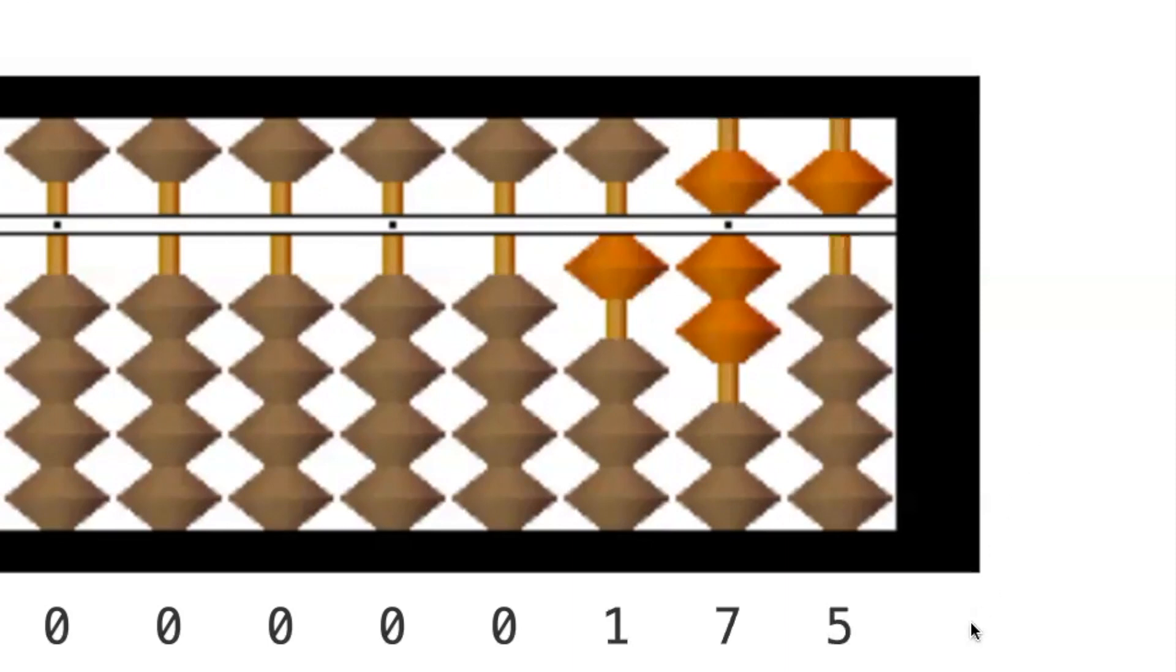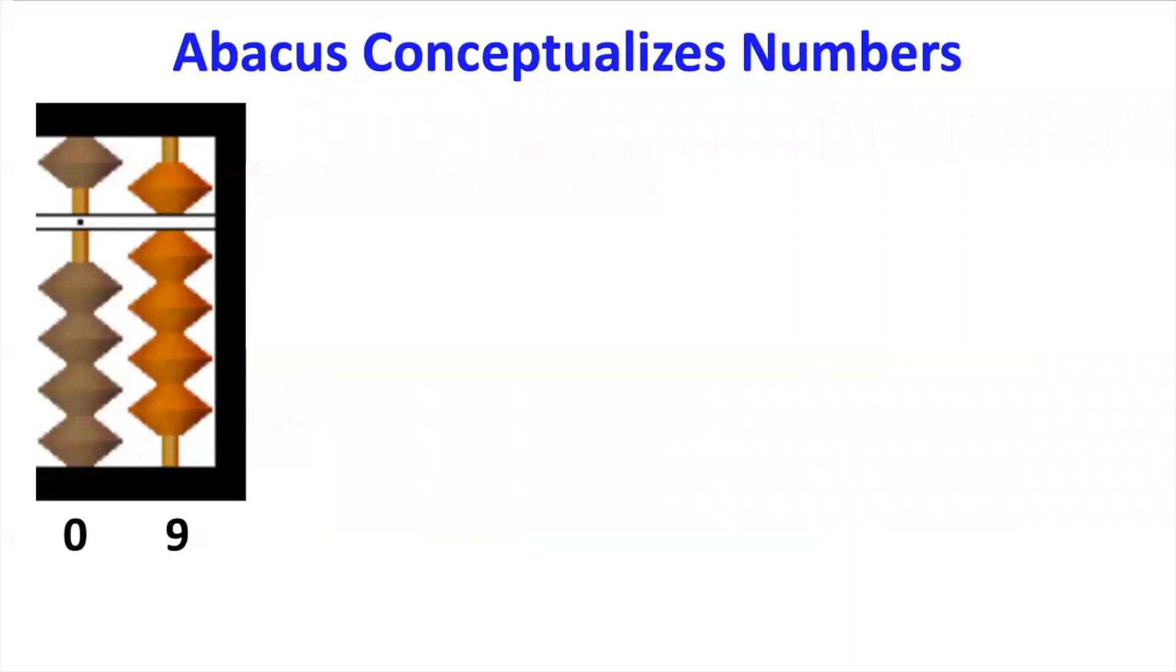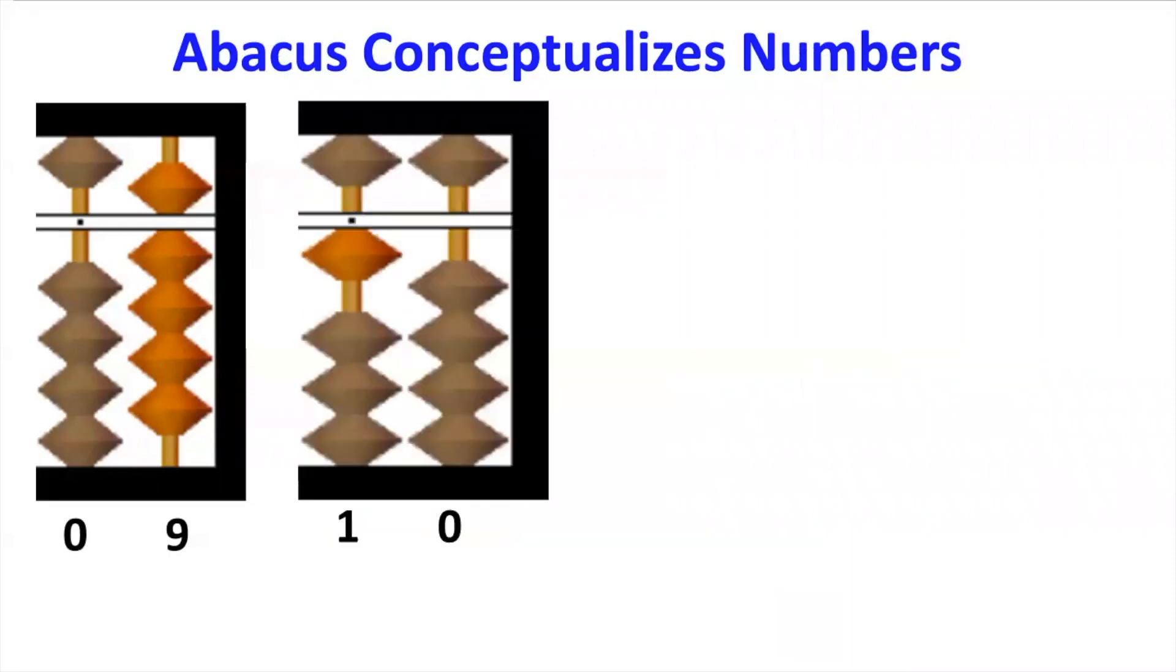Abacus is very helpful for children in number development. For example, as we count from 9 to 10, once a column would max out the beads, we have to move to the left column for 10. This bead play visualizes 10 as a leap from single digit to double digit. It conceptualizes base 10 structure.